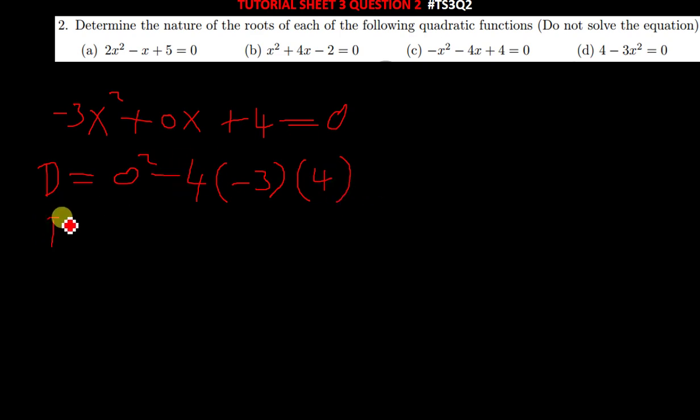So D will now be equal to, negative 4 times 3 will give us 12, and then 12 times 4 will give us 48. So D is equal to 48. If D is equal to 48, this tells us it also has two real roots. But just by looking at this equation, you can tell, you can agree with me that this has two equal real roots.